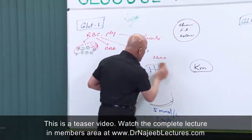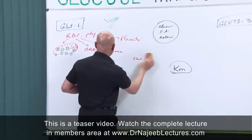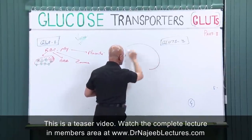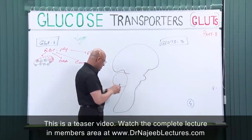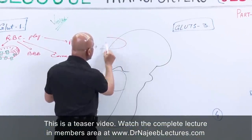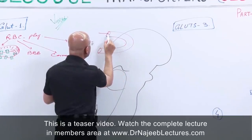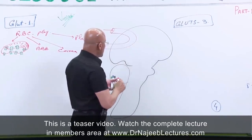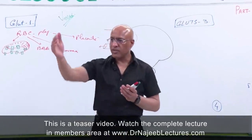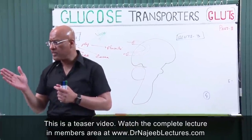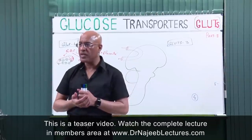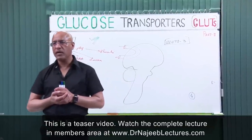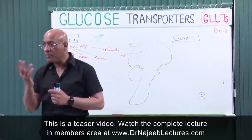Let's talk about the blood-brain barrier. What is it, and where are the GLUTs present? Imagine this is your central nervous system — a hypothetical vascular system where blood is coming in arterially and leaving through the venous end, with capillaries in between. Some substances present in the blood cannot enter the brain because they are blocked by the blood-brain barrier.